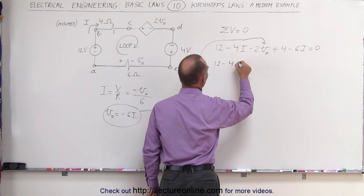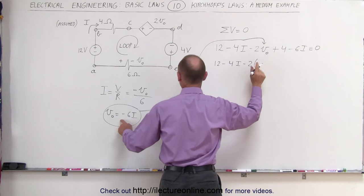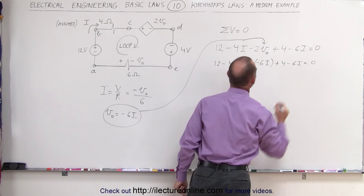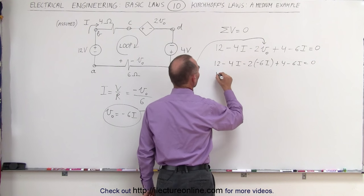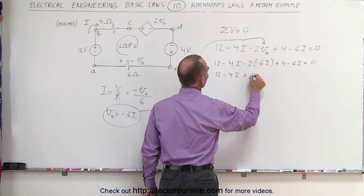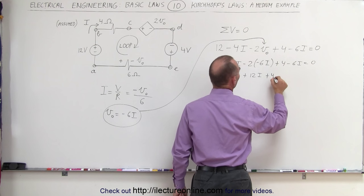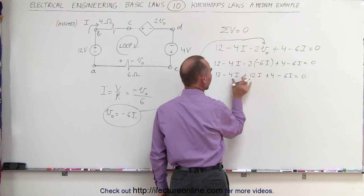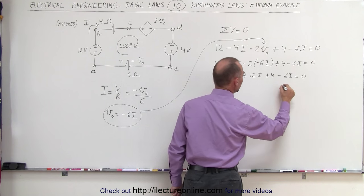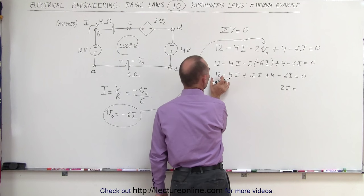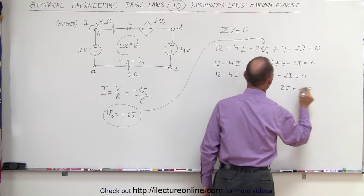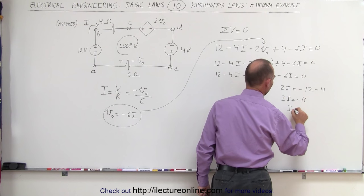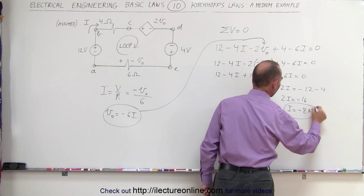12 minus 4 times I, minus 2 times V sub nought, which is a minus 6 I, plus 4 minus 6 I, is equal to 0. Let's go ahead and get rid of the parentheses. 12 minus 4 I, plus 12 I, plus 4 minus 6 I, is equal to 0. Adding up all the currents on the left side, minus 4 plus 12 minus 6, that is 2 I, and moving all the voltages or the numbers to the other side, that becomes a minus 12 and a minus 4, or 2 I is equal to minus 16, or I is equal to minus 8 amps, dividing both sides by a 2.